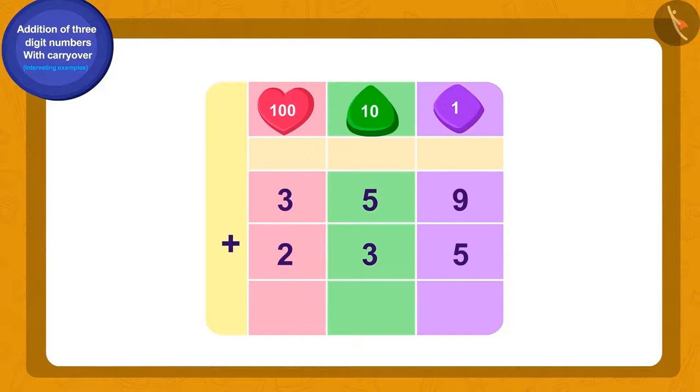What shall we do now? We will add numbers written in place of ones. Add 9 and 5, and what do we get? 14. How do we write 14 using carryover? We will write 4 of the number 14 in the ones place, and then carryover 1 to the tens place like this.